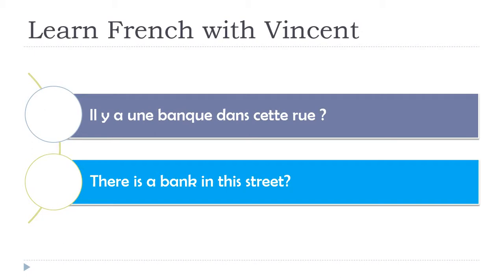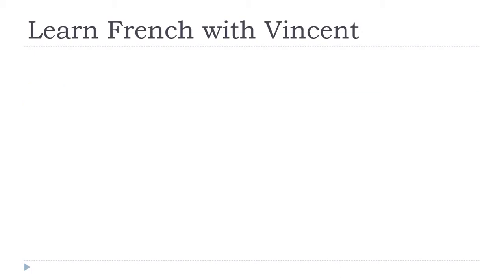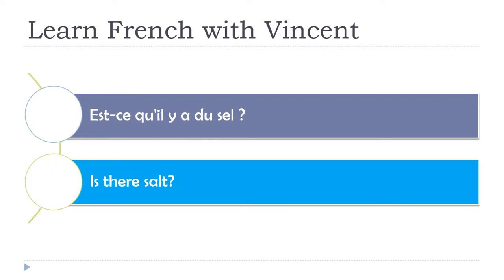For instance, the first example: 'Is there a bank in the street?' In French: 'il y a une banque dans cette rue?' Remember, because we're not changing the order of the sentence, you really need to raise your voice at the end to make it clear it's a question: 'il y a une banque dans cette rue?'